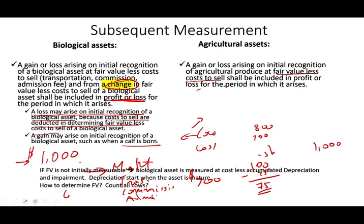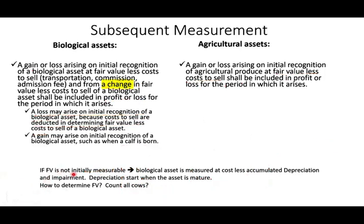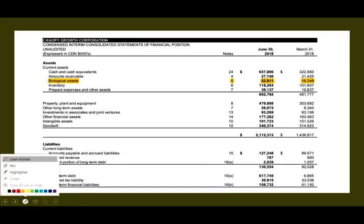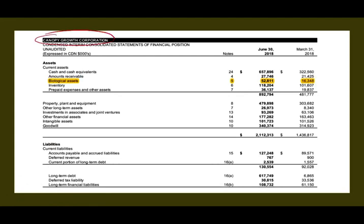If fair value is not measurable or available, biological assets should be recorded at cost less accumulated depreciation and impairment. Let's look at the balance sheet of Canopy Growth Corporation — they grow cannabis plants. Their biological asset is listed under current assets because they expect to convert it to cash within 12 months. It's not part of property, plant and equipment. You can see their biological asset amount in Note 5.